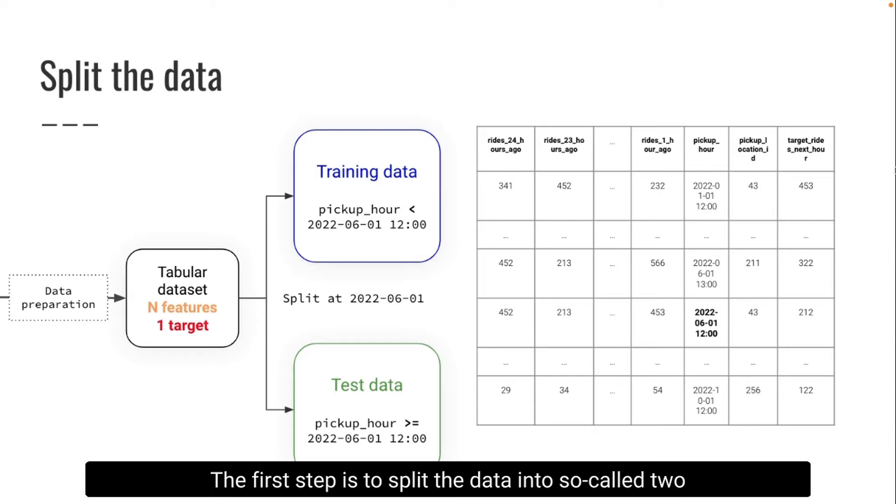The first step is to split the data into so-called two datasets: training data and test data. To split the data, most people talk about random splitting the data. That's in fact not the best idea, especially when you're using time series.